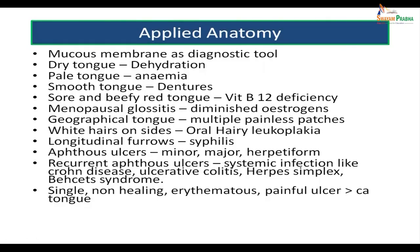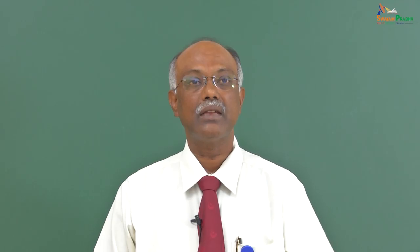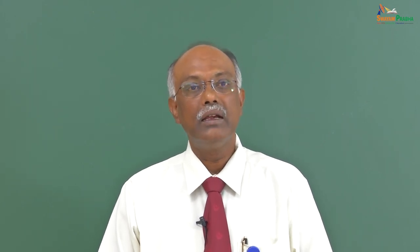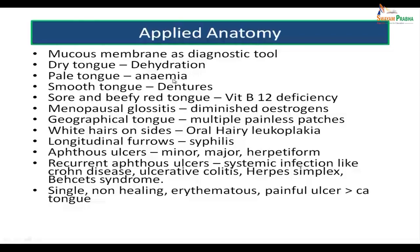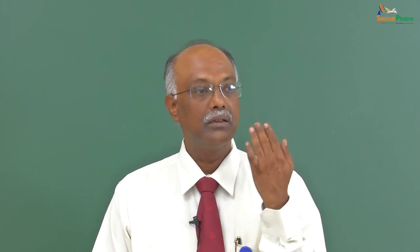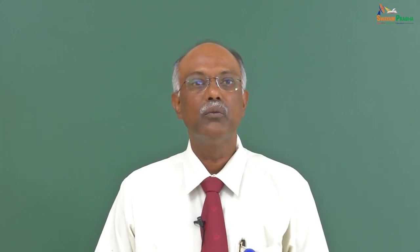Now we come to applied anatomy. The mucous membrane of the tongue can be used as a diagnostic tool. A dry tongue indicates dehydration. A pale tongue indicates anemia — lack of hemoglobin. A smooth tongue is usually seen due to dentures: when people wear dentures for a prolonged period, the surface of the tongue, normally rough because of the presence of papillae, becomes very smooth on the dorsal surface.